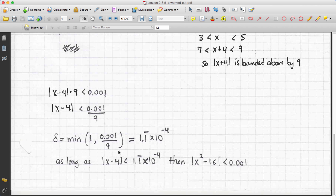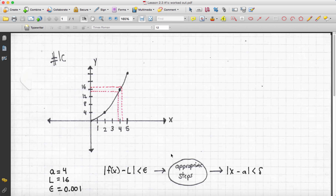So, as long as absolute value of x minus 4 is less than 1.1 repeating times 10 to the negative 4, then I'm guaranteed that the absolute value of x squared minus 16 will be less than 0.001, my epsilon value. This is the value of delta that makes the definition work. And that's 1c worked out.